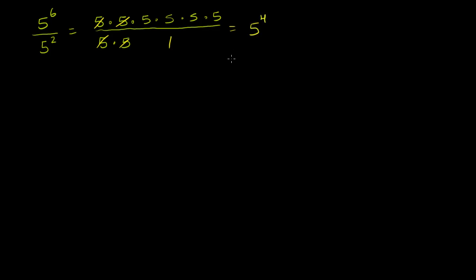Notice what happens. Essentially, we started with six 5's multiplied by themselves in the numerator, and then we were able to cancel out the 2 in the denominator. So this really was equal to 5 to the sixth power minus 2. We were able to subtract the exponent of the denominator from the exponent in the numerator.